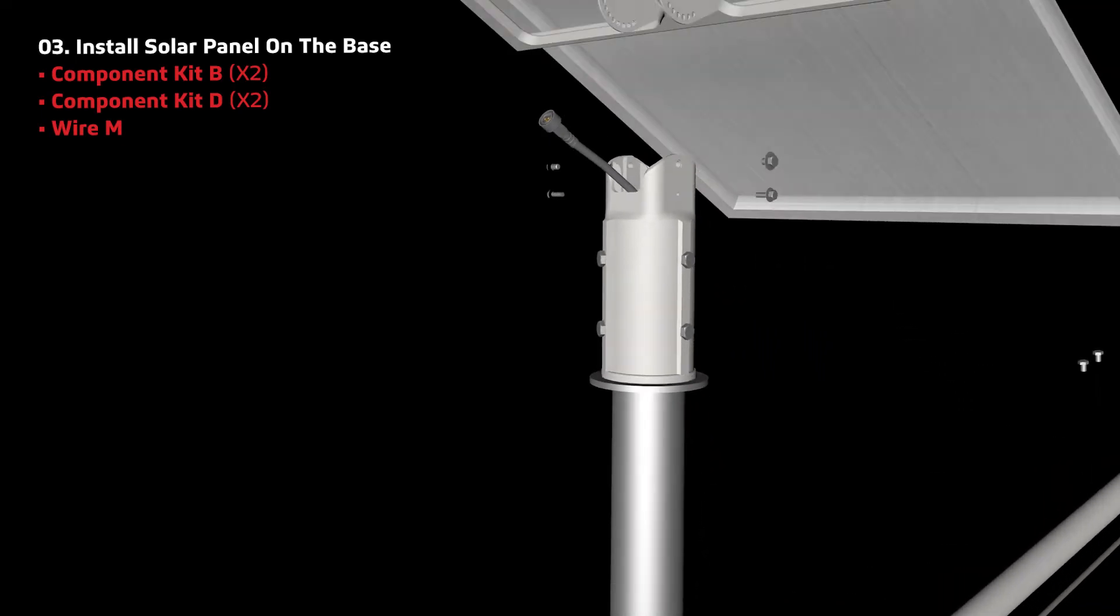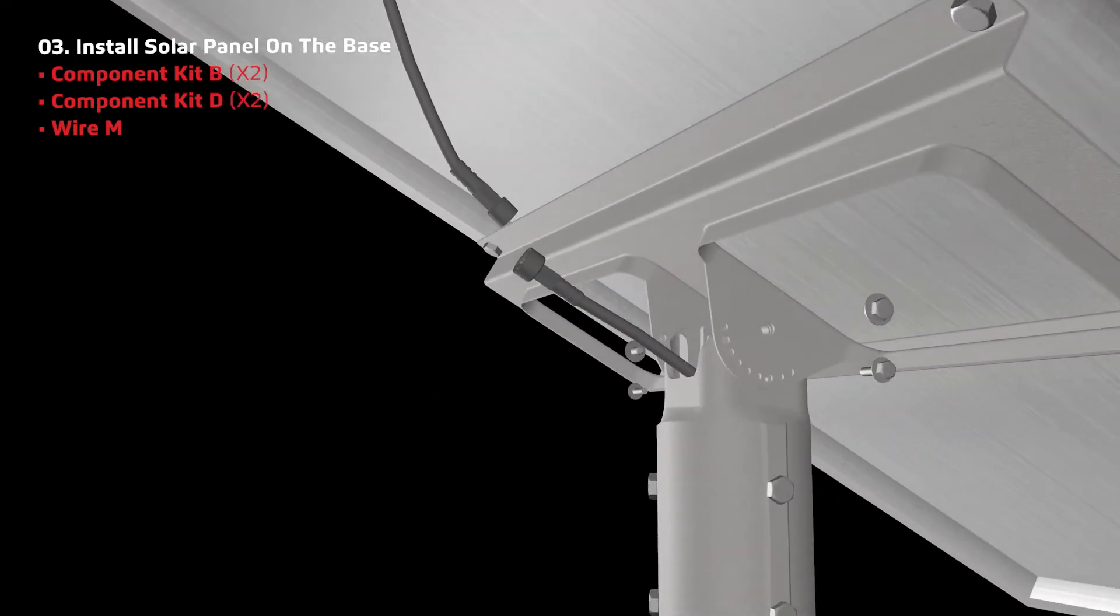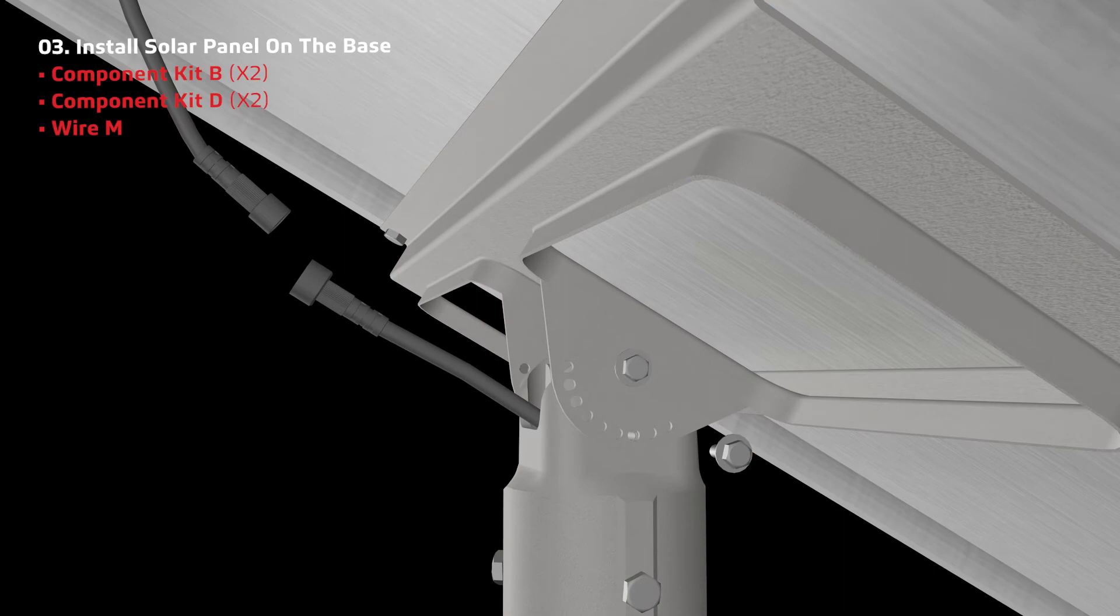Connect the solar panel to component F by using the screws in component kit B and component kit D.